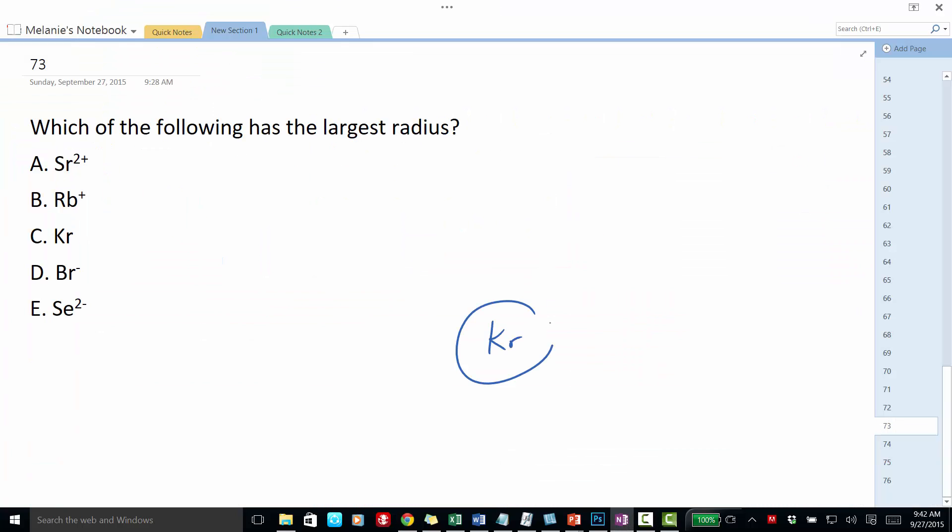So we put krypton in the middle, it has 36 electrons. The rubidium atom has 37 electrons, but when it's missing one of those electrons, it's also 36 electrons.